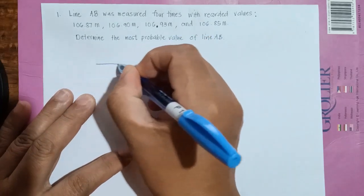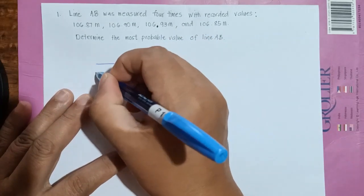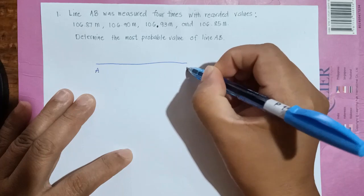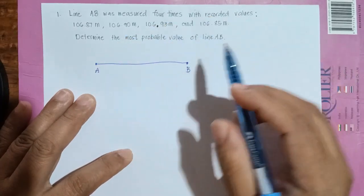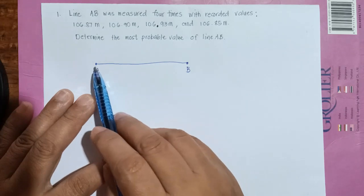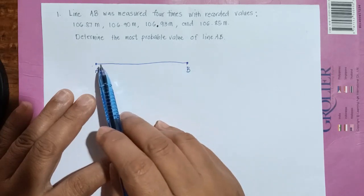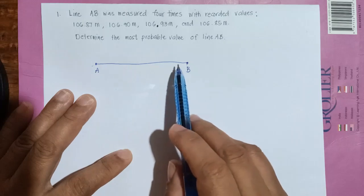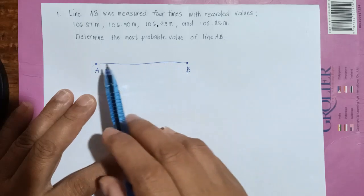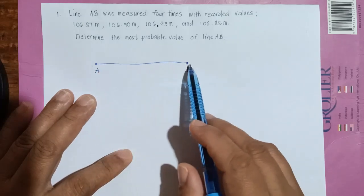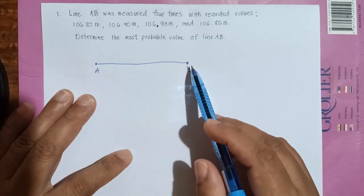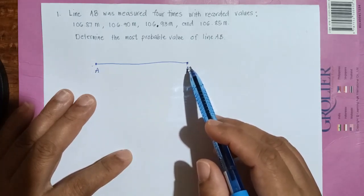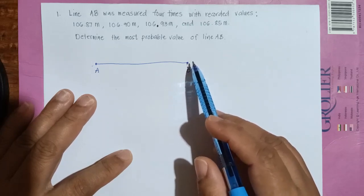Okay, so let's say A and this is point B, and this line is measured four times now. So trial one you have 106.87, trial two 106.90, trial three 106.93, and trial four 106.85.